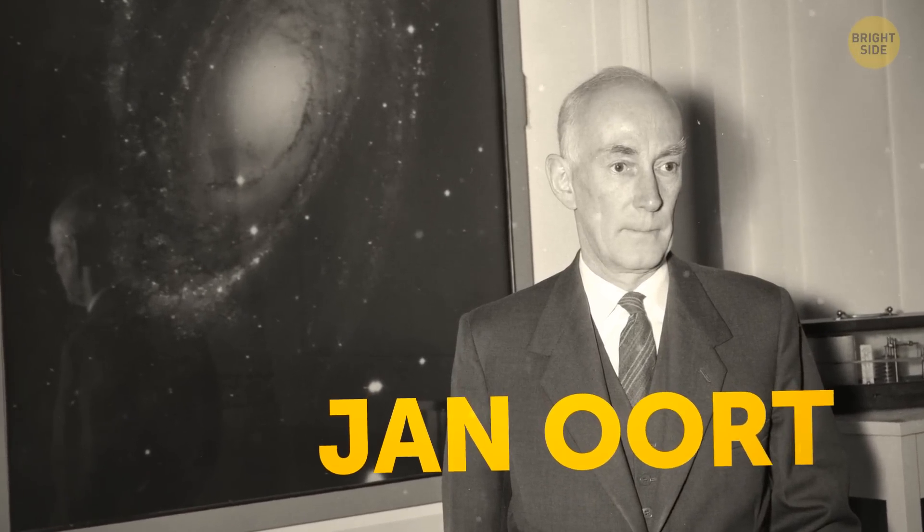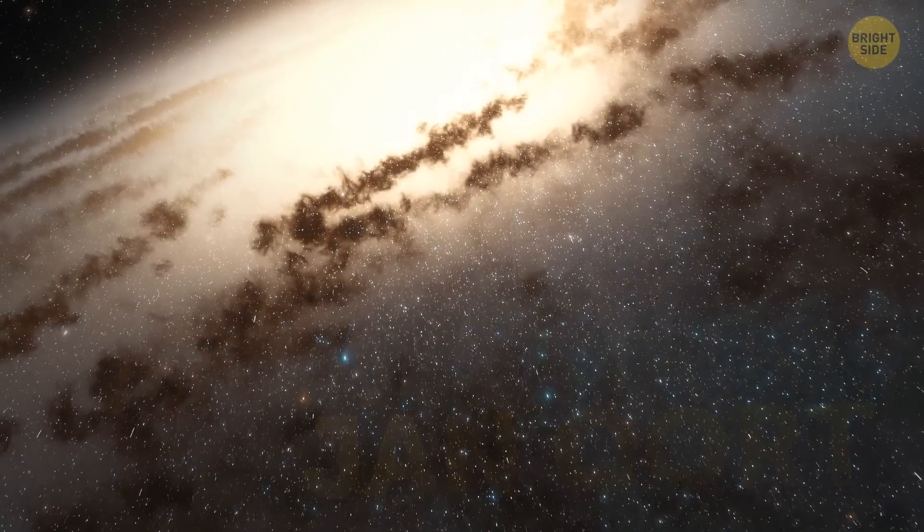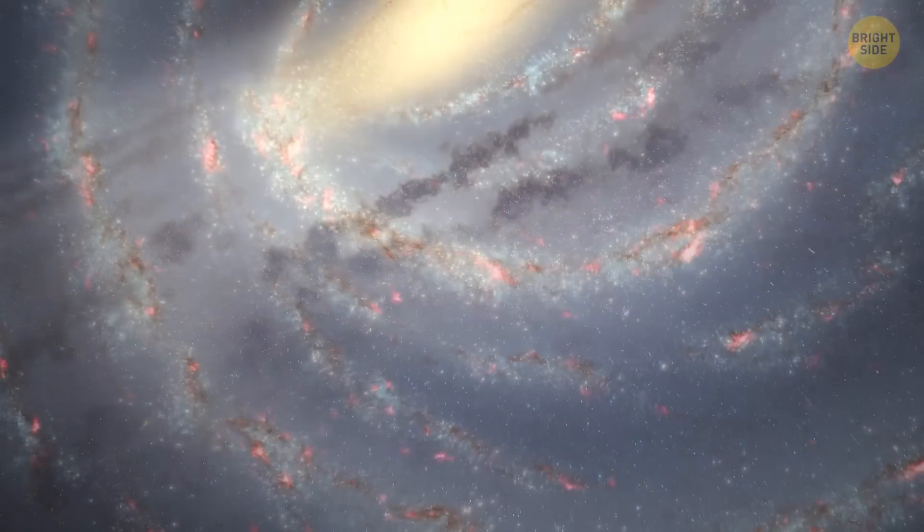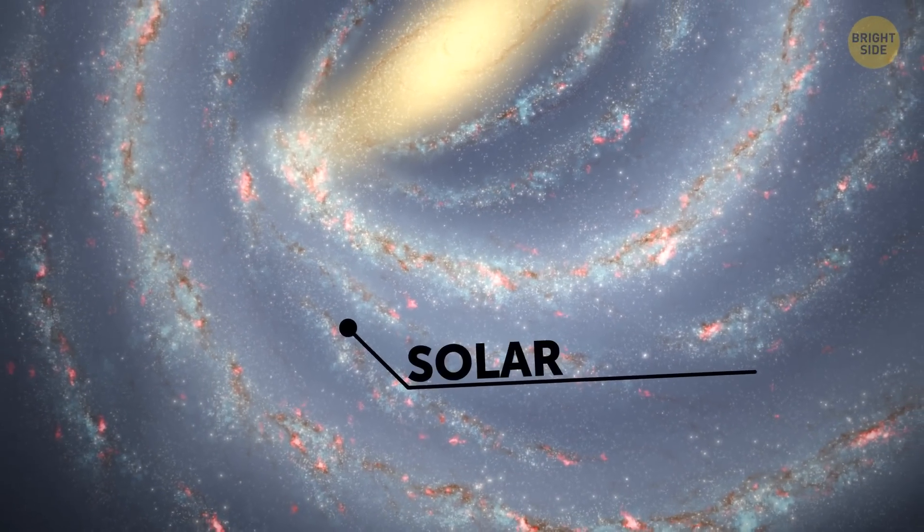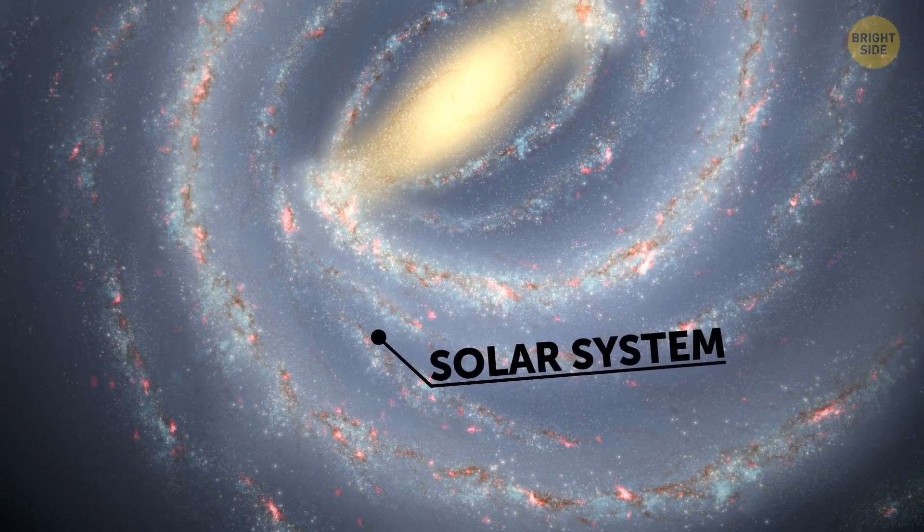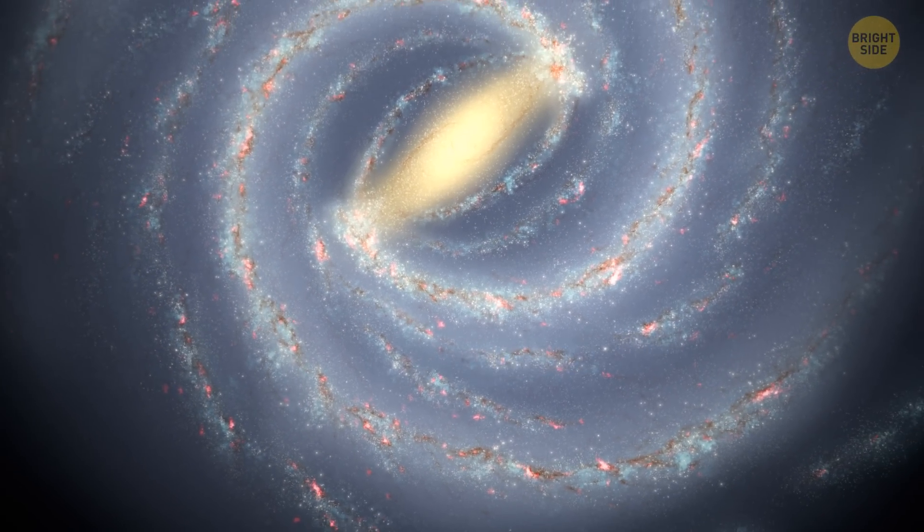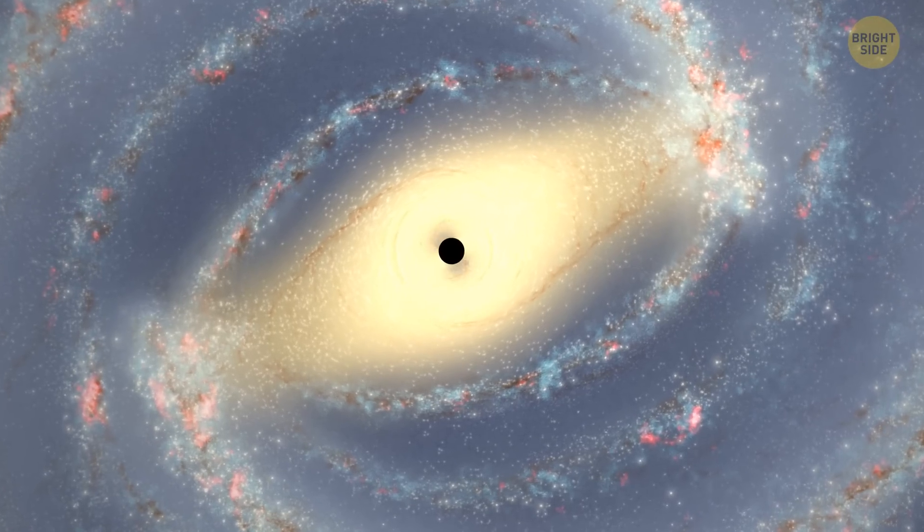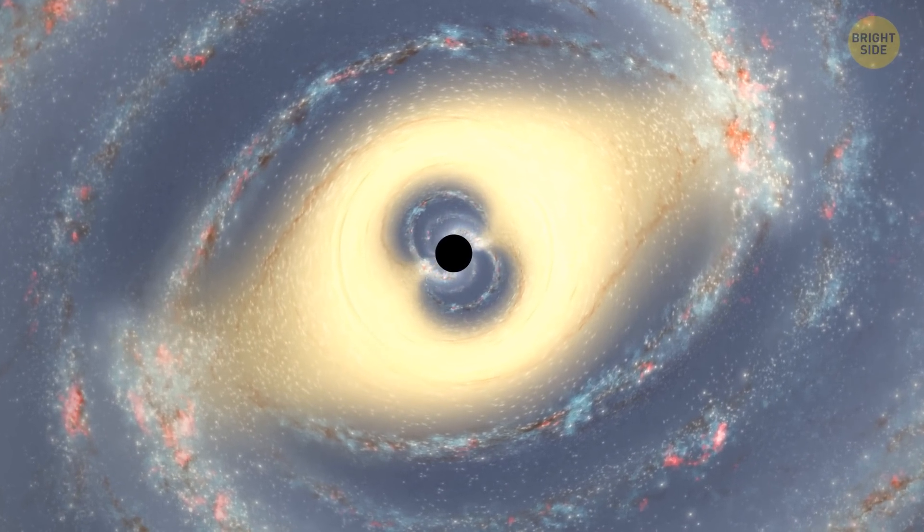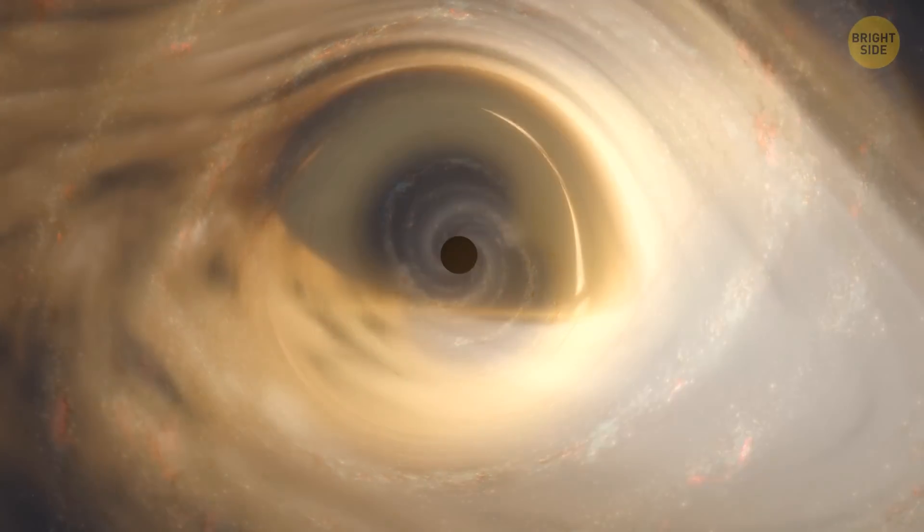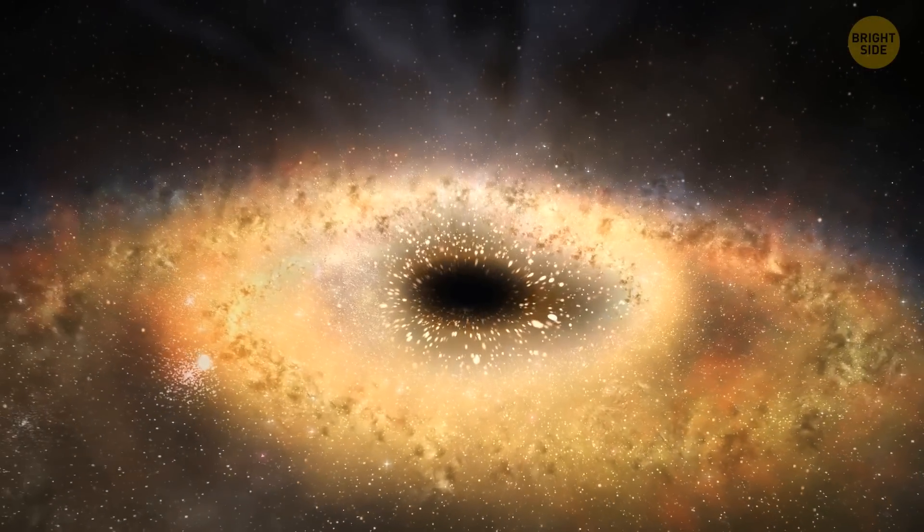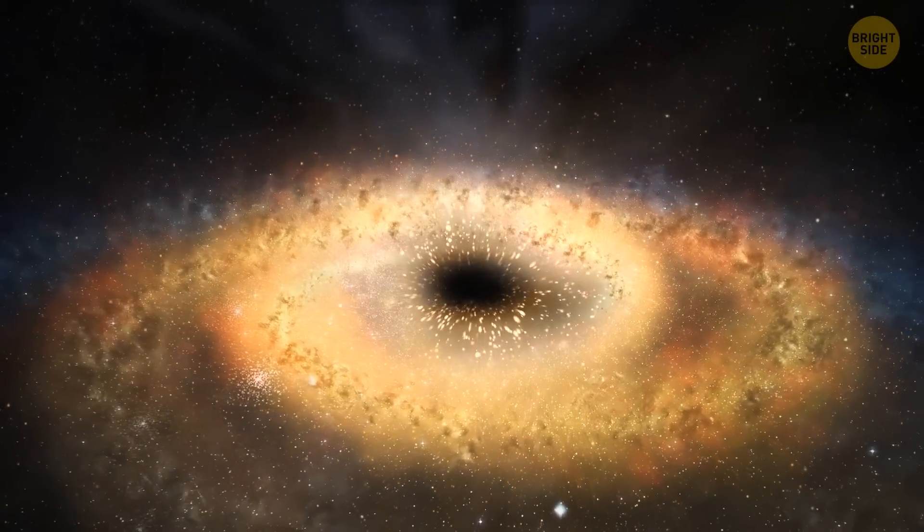A long time ago, a smart astronomer named Jan Oort figured out our awesome galaxy isn't just sitting still. It's actually spinning around like a giant cosmic carousel. He also realized where our sun is located in the galaxy, which is pretty important information, and today we can study the Milky Way better than ever before. In its center, there's a supermassive black hole, which is like a giant vacuum cleaner that sucks up everything around it. It's so powerful and strong that everything in our precious galaxy revolves around it.